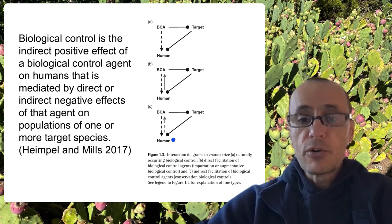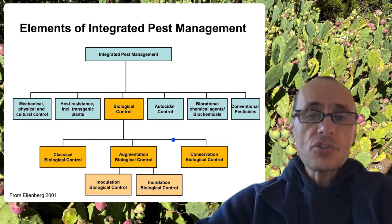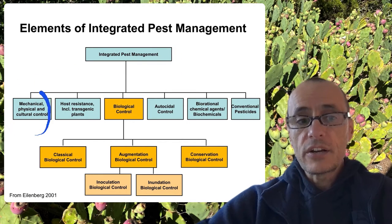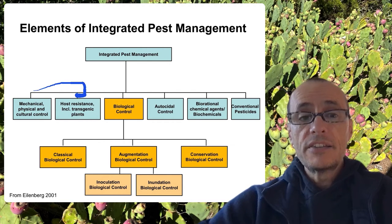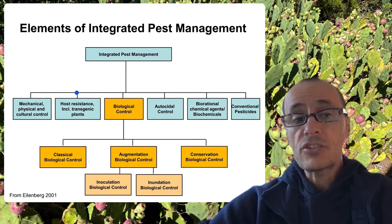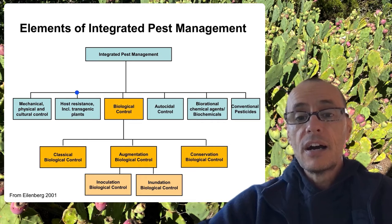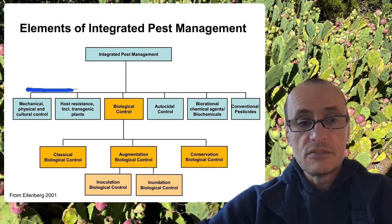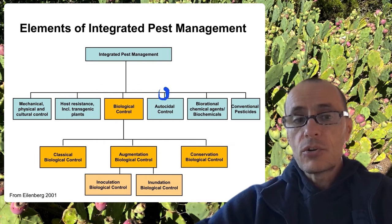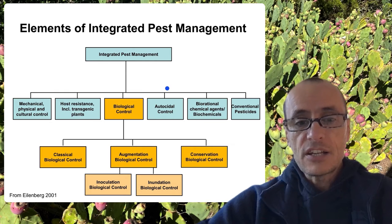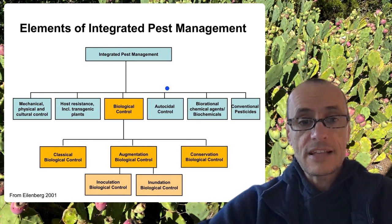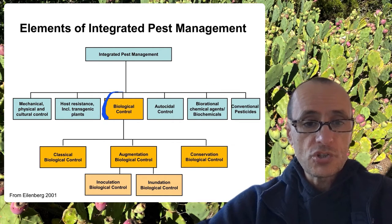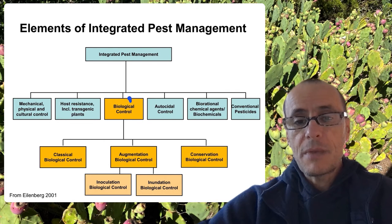So the nice thing is that it's focusing on the interactions. Biological control fits into a broader umbrella of pest management strategies that include things like mechanical, physical, and cultural controls — things that people can do to get rid of pests — the development of host plant resistance, or other genetic tools that make plants or animals less susceptible to pests. There are also things like autocidal control, the use of Wolbachia or other gene editing tools that make pests less likely to reproduce, as well as biorational chemical agents and conventional pesticides. Biological control is one of these tools that fits into the integrated pest management paradigm.